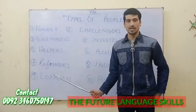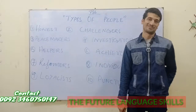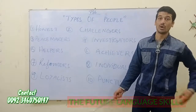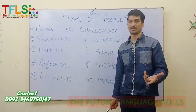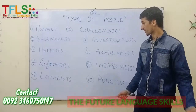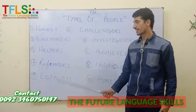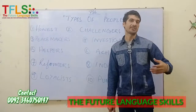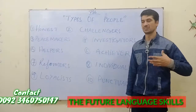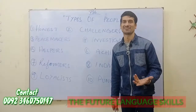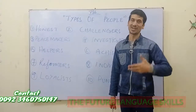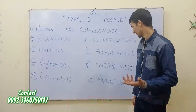Number nine: 'loyalists.' These are loyal people — 'aise log jo ke wafadar hote hain, wafa karne wale log.' So you can say: I like a friend who is a loyalist.